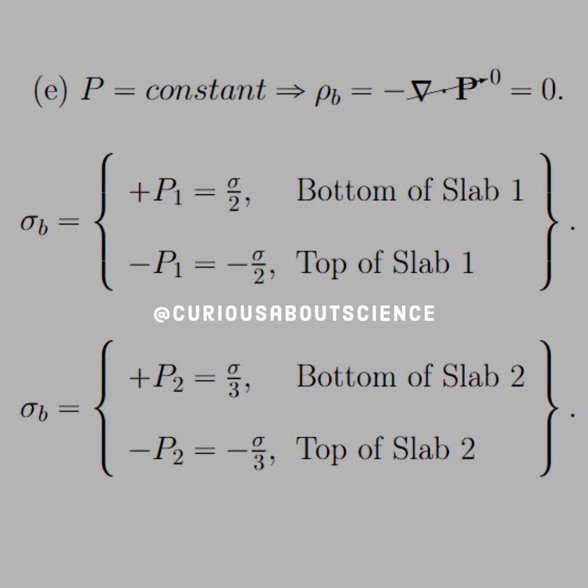Okay, so for the surface-bound charge, this is a little different. For the bottom of slab 1, we see that we have plus P1, and for the top of slab 1, we have minus P1. This makes sense, given that the top plate was a positive charge and the bottom plate was a negative.